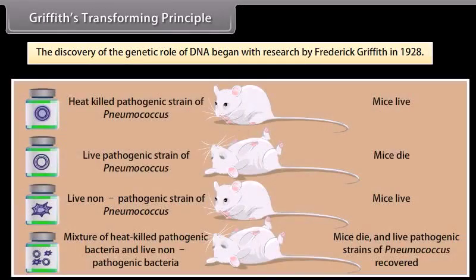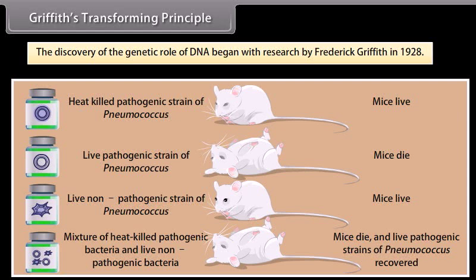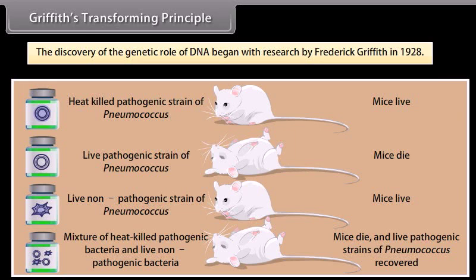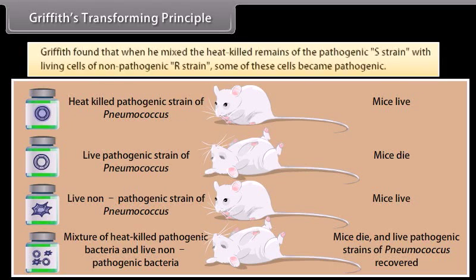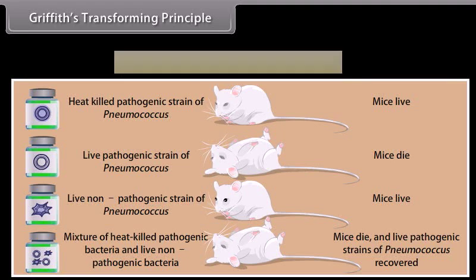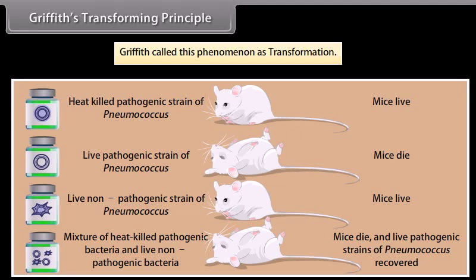Griffith's Transforming Principle. The discovery of the genetic role of DNA began with research by Frederick Griffith in 1928. Griffith worked on two strains — pathogenic and non-pathogenic — of Streptococcus pneumoniae. He found that when he mixed the heat-killed remains of the pathogenic S strain with living cells of the non-pathogenic R strain, some of these cells became pathogenic. Griffith called this phenomenon transformation.